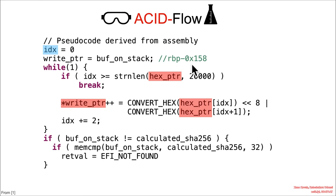That converted value is written into the right pointer. The right pointer starts at rbp minus 158, and it's going to be incremented by pointer-plus-plus for each byte that's written into it. Then the index is plus-equals two, and we continue on with the loop.